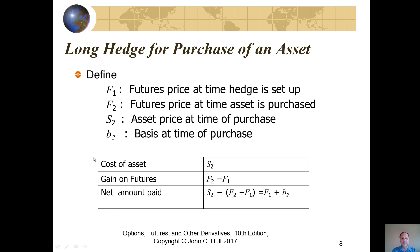For a long hedge for the purchase of an asset: if we purchased it on the day we wanted, we would pay S2, the asset price at time of purchase. With a futures contract hedge, F1 is the futures price at the time the hedge is set up. On the day of expiration, we have F2, the futures price at the time the asset is purchased. If the future expired on the exact day we wanted to engage in the purchase, F2 would equal S2, they would cancel out, and we would pay F1, what we signed the contract for.